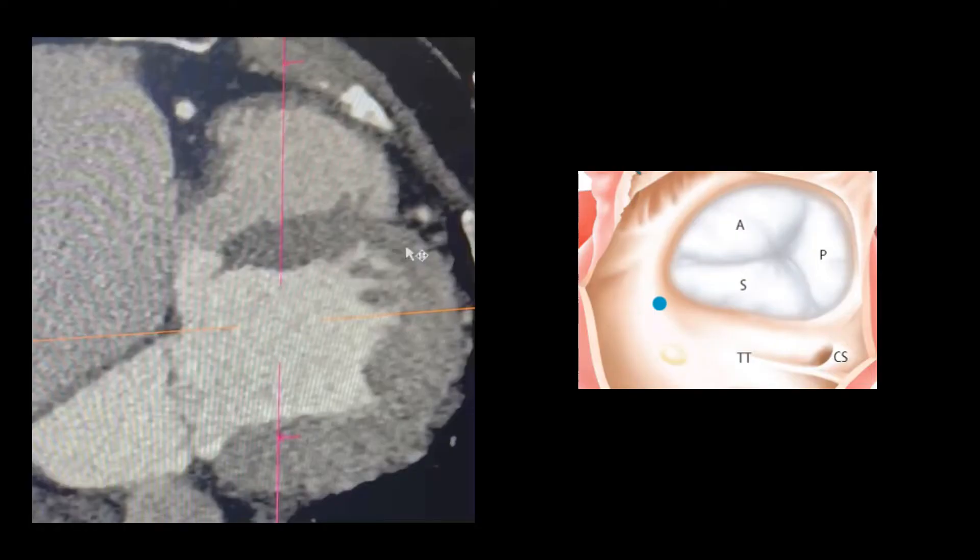Now let's see how CT scan can help in identifying the issues with the pacemaker lead. In this loop, which belongs to our patient, we can see many structures including left ventricle, right ventricle, a massively dilated right atrium, left atrium, and mitral valve.